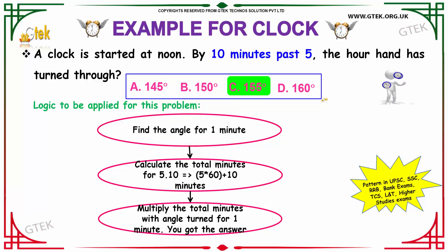We have our options over here. Option A, 145 degrees. Option B, 150 degrees. Option C, 155 degrees and option D as 160 degrees. Let us see the logic.